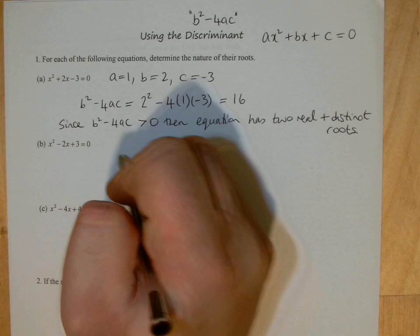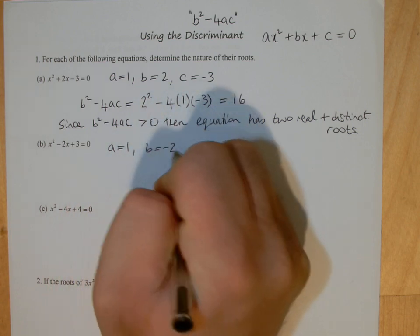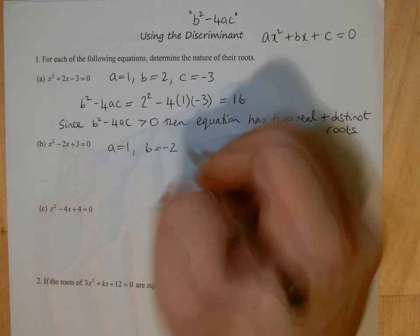Okay, so if we look at the second one, in this case here, a is equal to one, b is equal to negative two, the value in front of the x, and c is equal to three.